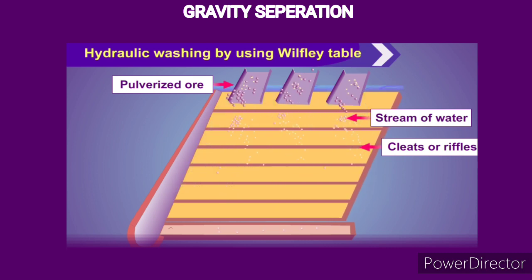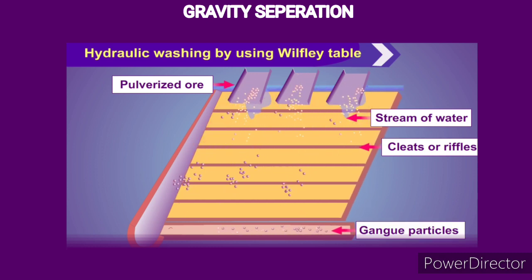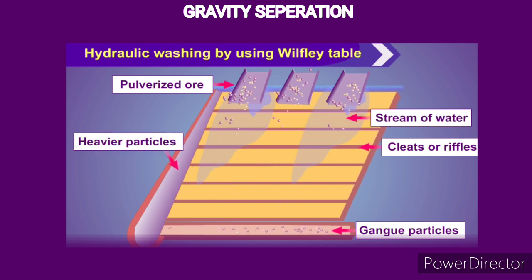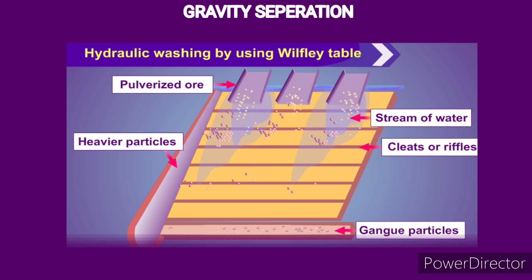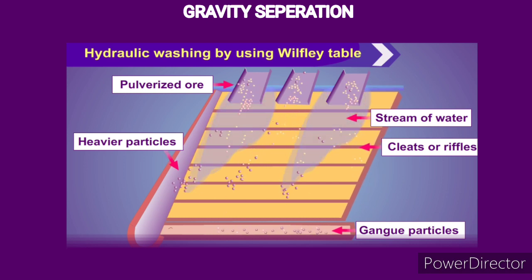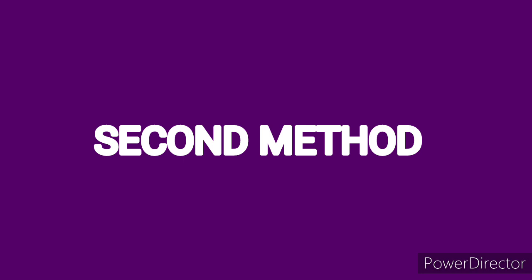A running stream of water is passed across the table. The lighter gang particles are carried away by water, and heavier particles settle between the wooden cleats or ripples fixed on the table.